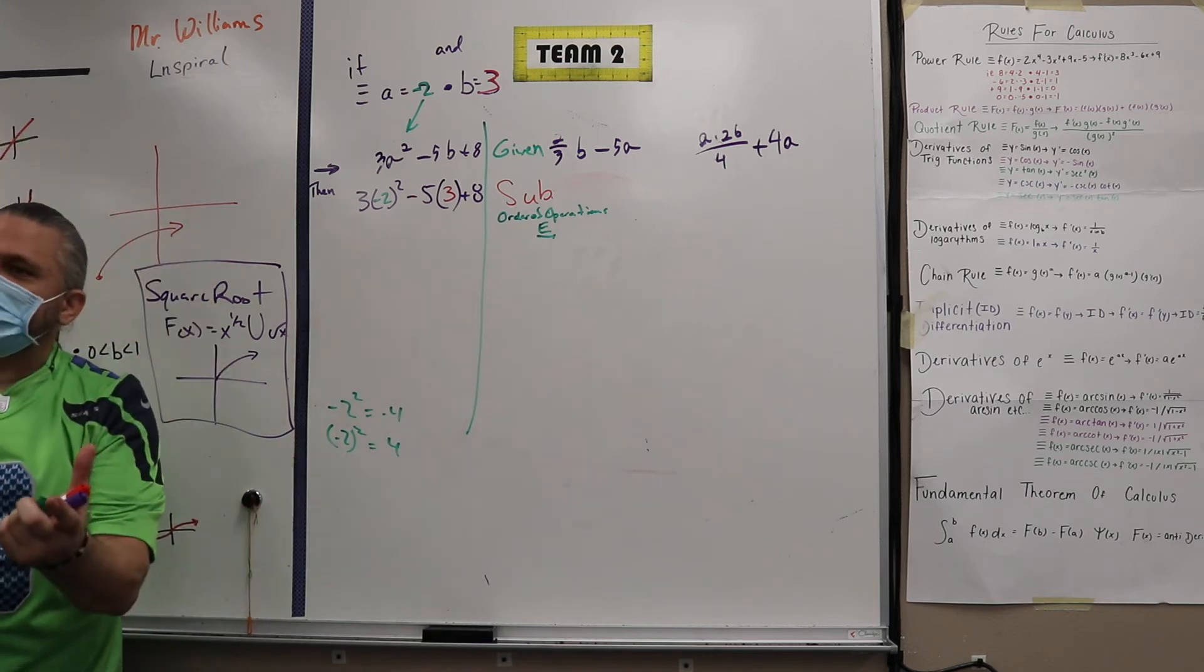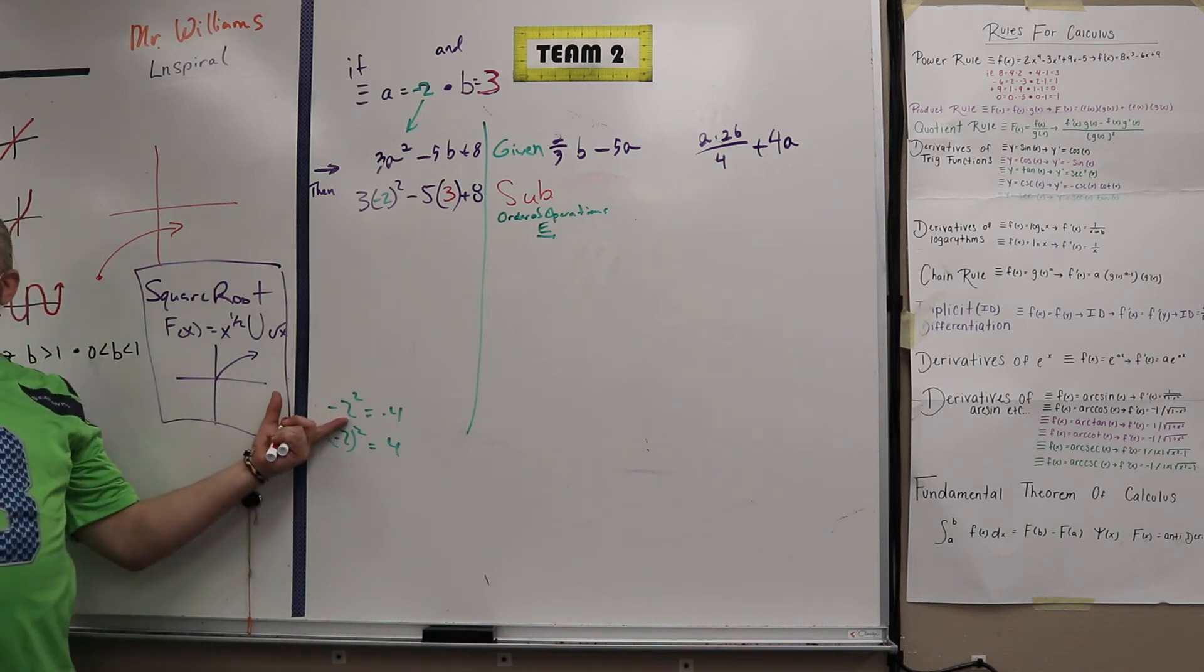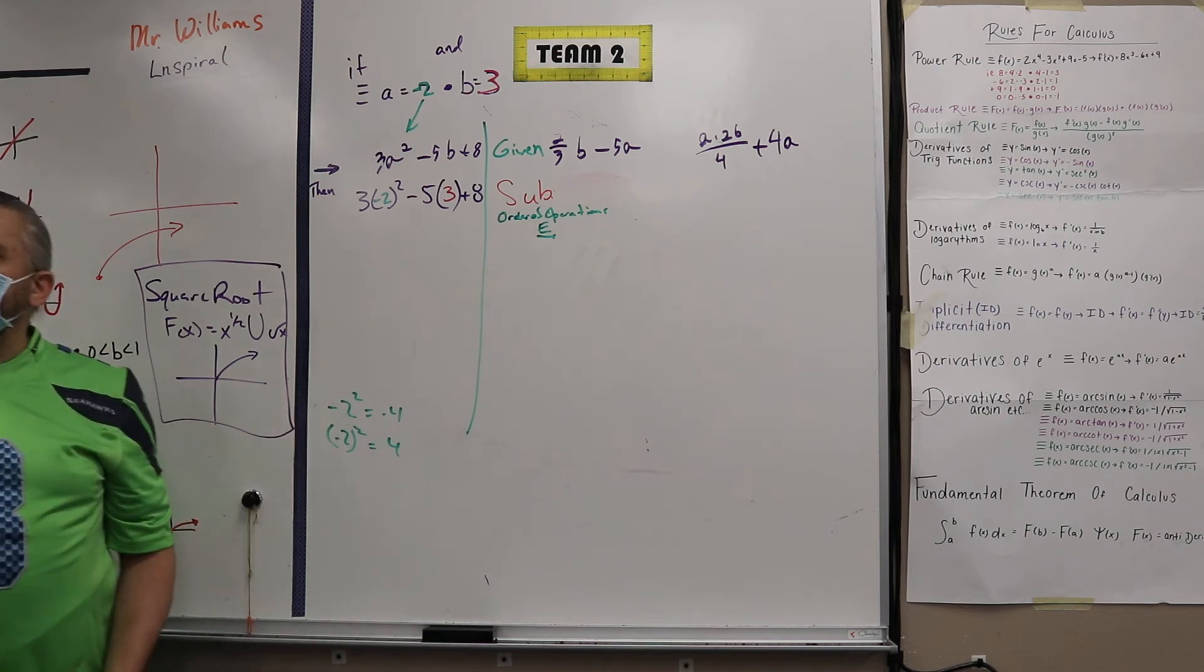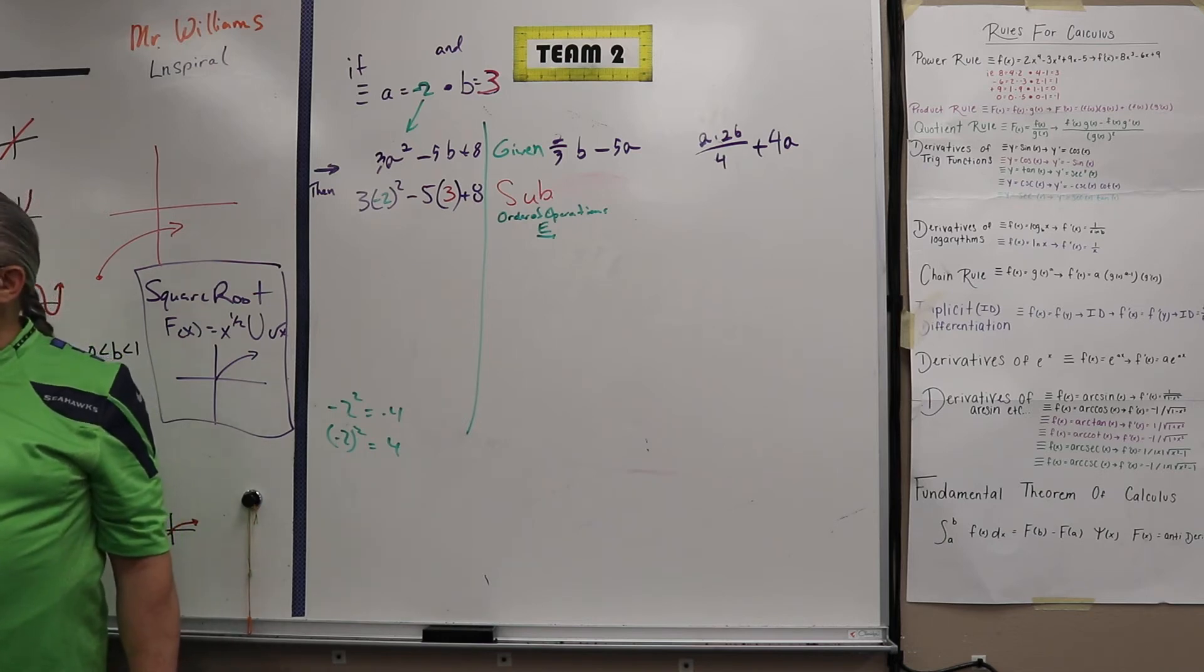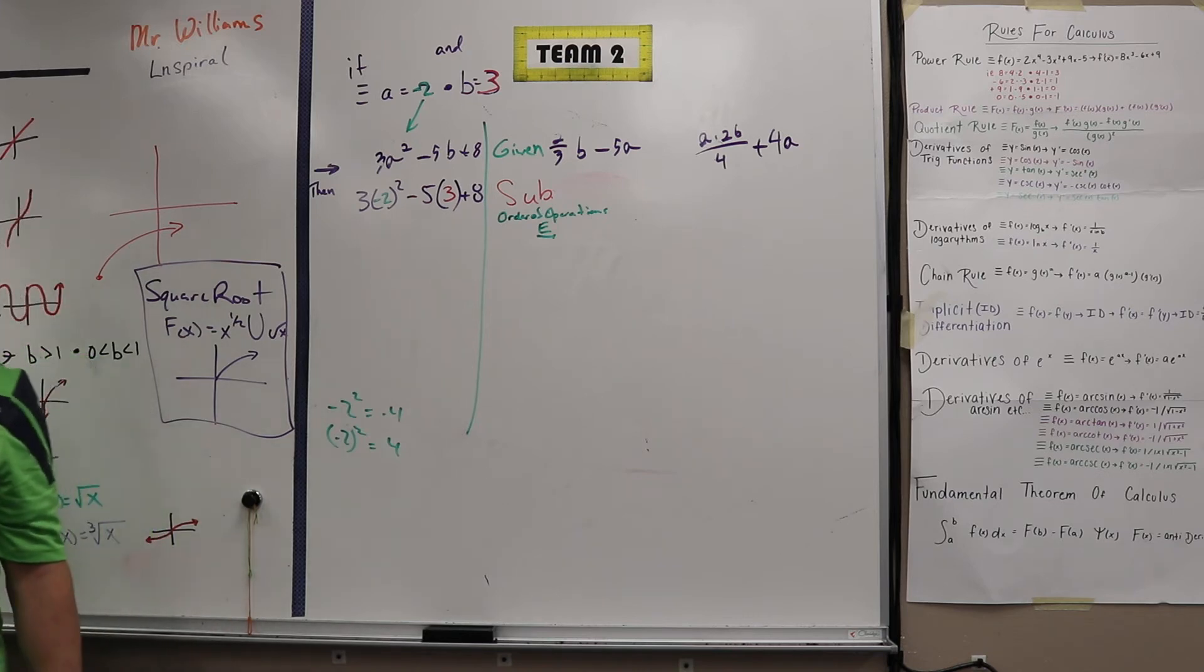You see the difference? One, you're saying the quantity of negative two. The other one, you're actually not including the negative. Because remember, did I tell you this? There are no negative numbers.